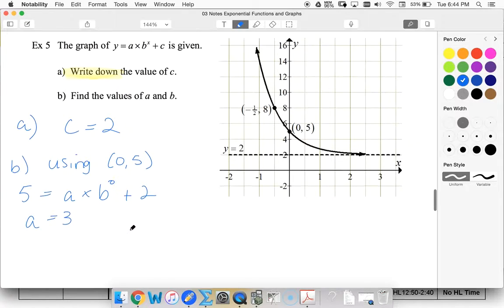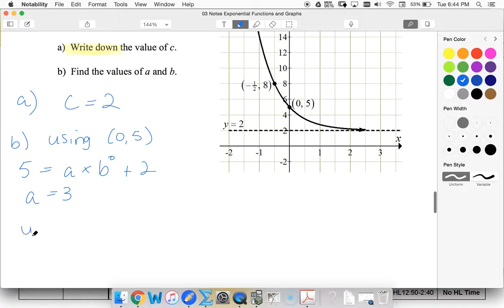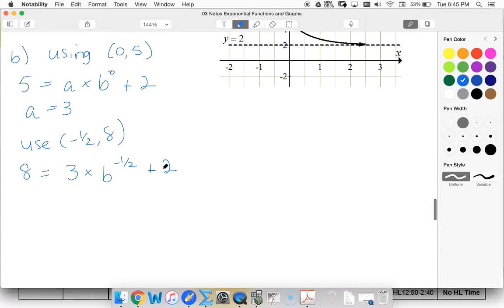So now we're going to use negative a half, 8. So 8 equals 3 times b to the negative half plus 2. Move 2 to the other side is 6. Divide by 3, I get 2.